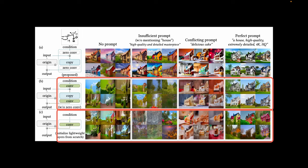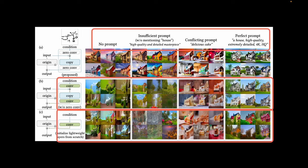Thirdly, they also try changing the prompting scenarios, such as no prompt, insufficient prompt, and conflicting prompts. And in all scenarios, ControlNet manages to generate meaningful images rather than just collapsing.